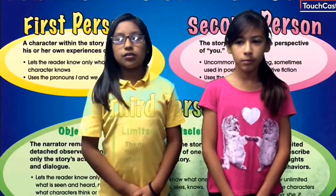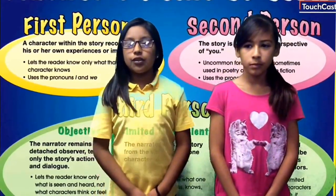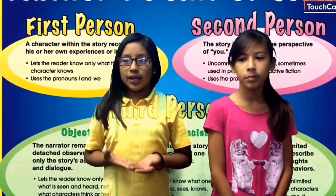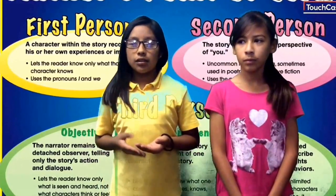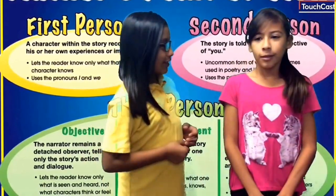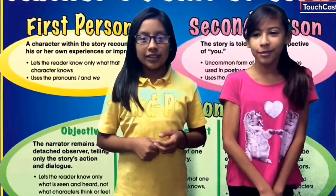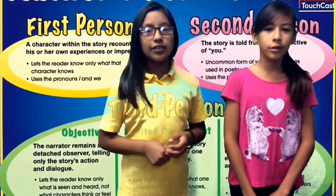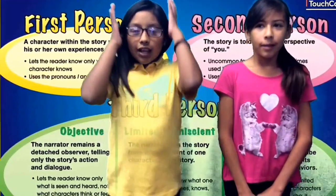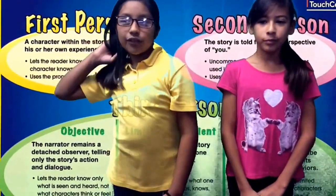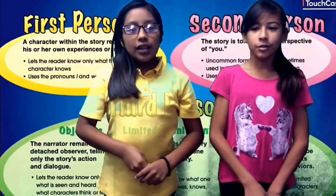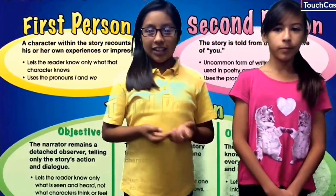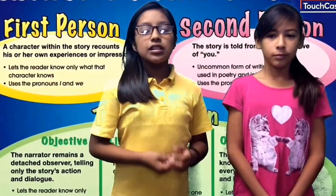First, we're going to talk about the first point of view. First-person point of view is when the author writes I, we, me, my, or our. And lastly, the third-person point of view is when the author says she, he, they, them, or also names of people.